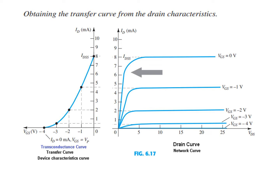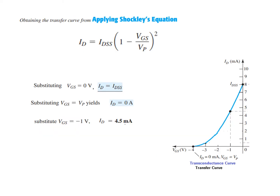Another method is to simply plug several values into the Shockley equation. For example, setting VGS equal to 0, then VGS equal to VP, and VGS equal to −1, we get corresponding values of ID which we can then plot.